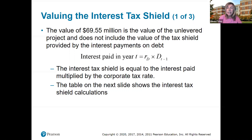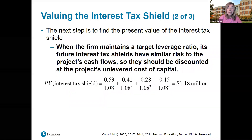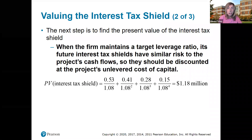Interest paid in year T is the interest rate on the debt multiplied by the debt in the previous year. The interest tax shield is equal to the interest paid on the debt multiplied by the corporate tax rate. The table on the next slide shows the interest tax shield calculations. Our next step is to find the present value of the interest tax shield. When they maintain a target leverage ratio, the future tax shields have similar risks to the project's cash flows, so they should be discounted at the project's unlevered cost of capital — 8% here — giving us a value of $1.18 million.